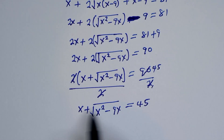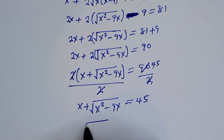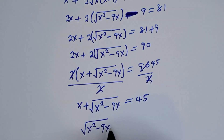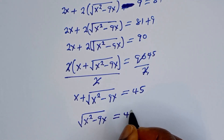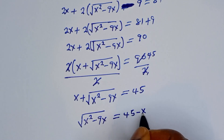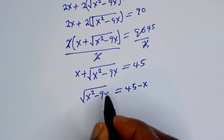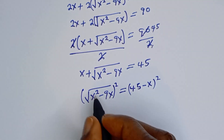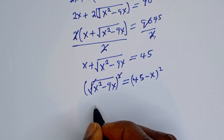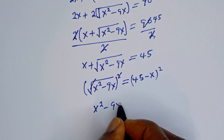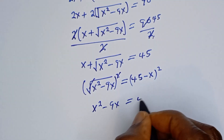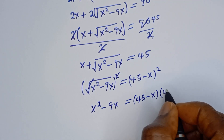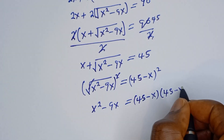Then we take s to the other side. We have square root of s squared minus 9s is equal to 45 minus s. Let's square both sides of this equation.